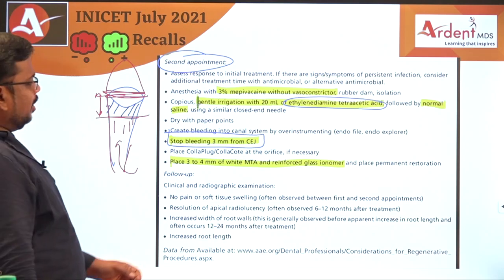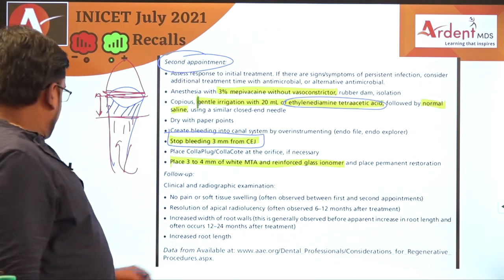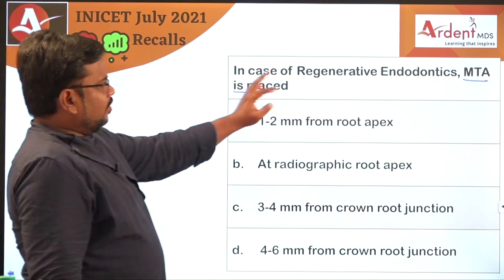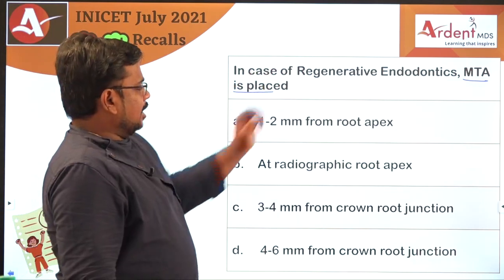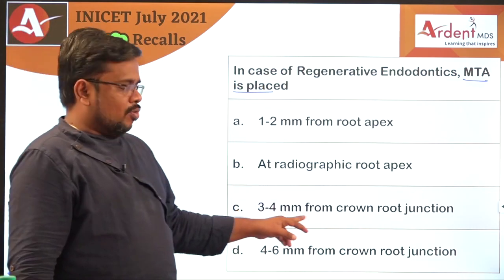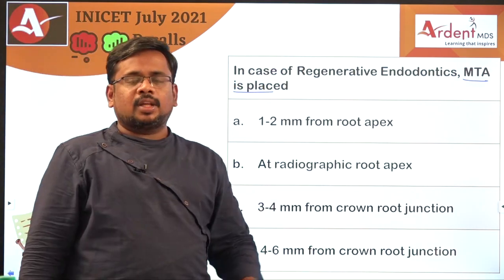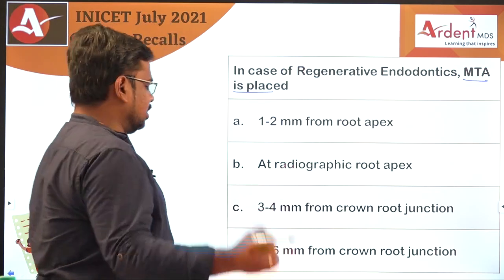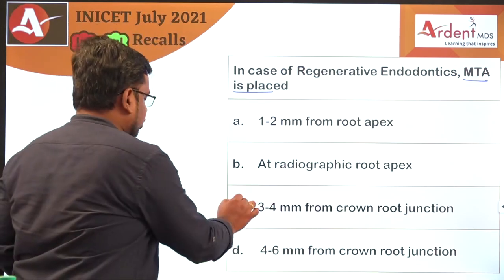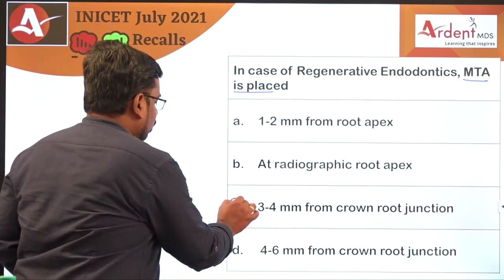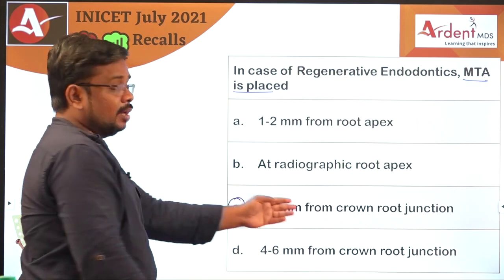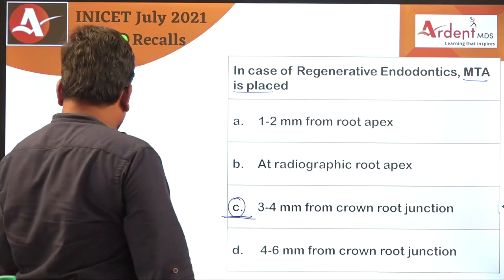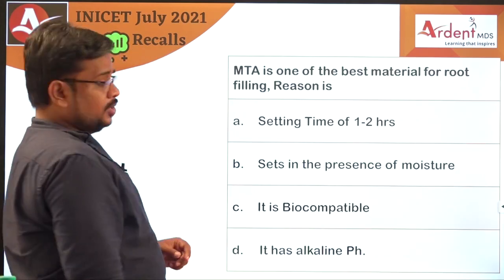Coming to the question: in case of regenerative endodontics, MTA is placed 3 to 4 millimeters from the crown-root junction or cemento-enamel junction. This is a direct pick question. If you know the concept and the fact, you can answer it.